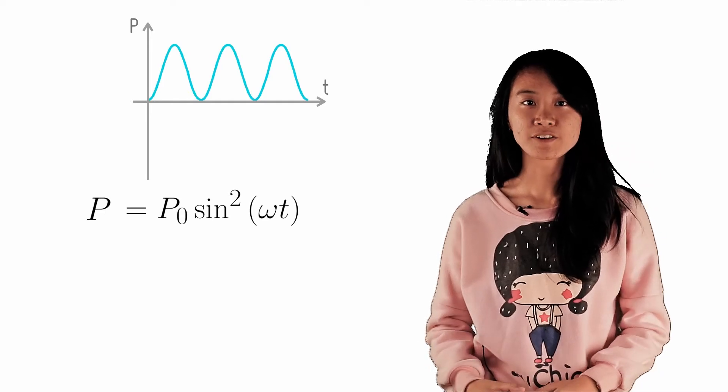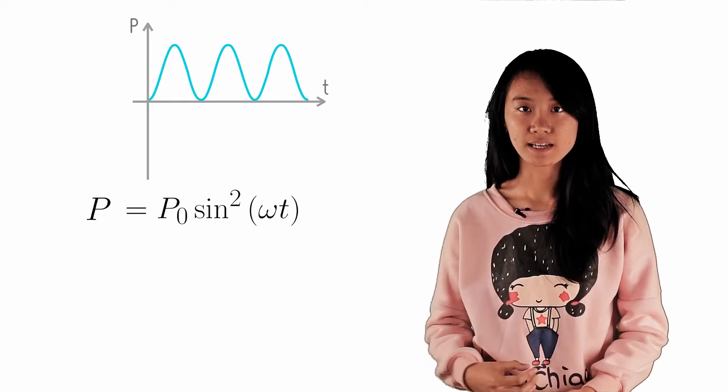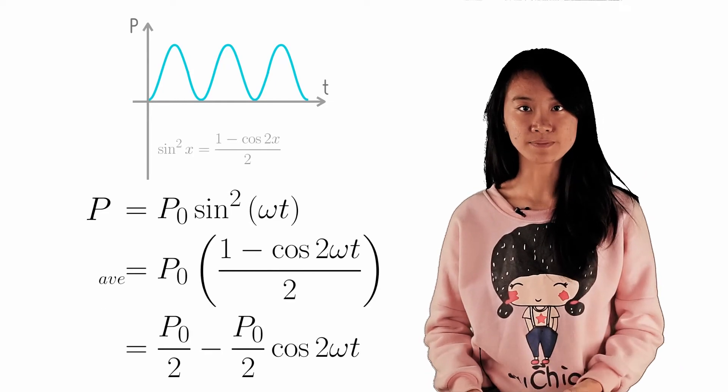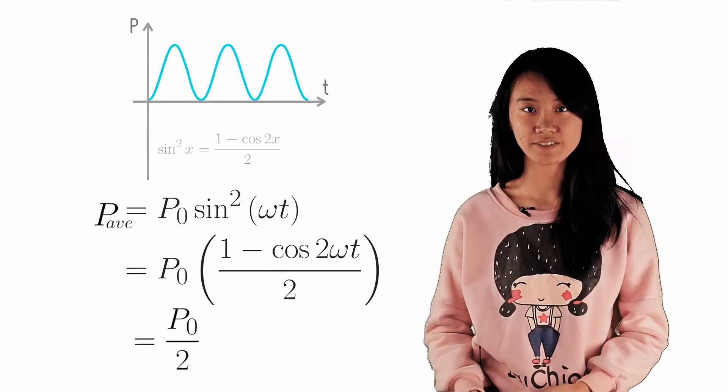Notice that you can also use the equation for instantaneous power, and equivalently take the time average of the instantaneous powers, and you will obtain the same expression after simplifying the trigonometric expressions.